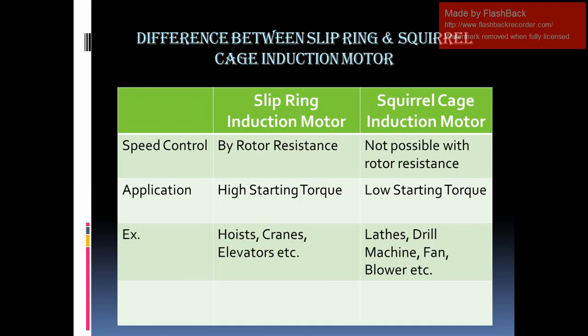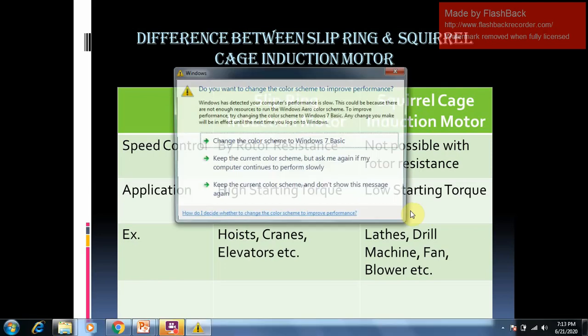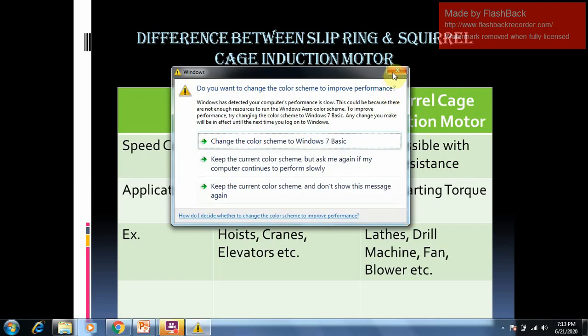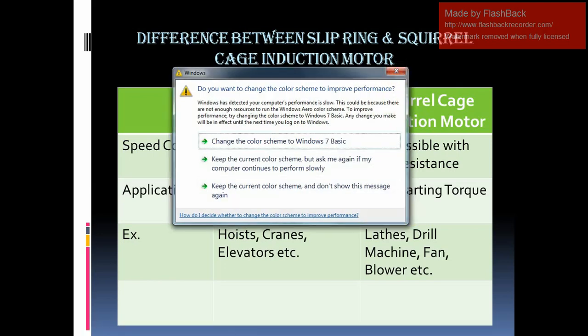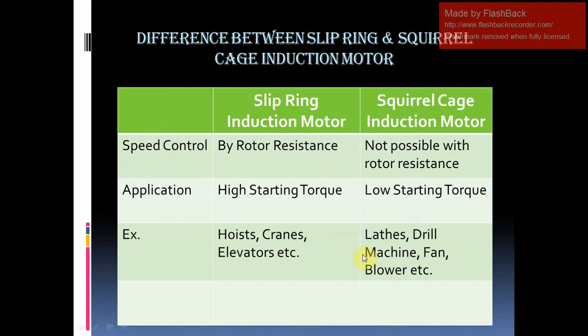Speed control: one of the better methods of speed control is by rotor resistance variation. In case of slip ring induction motor, we know that external rotor resistance can be added and speed control is possible.